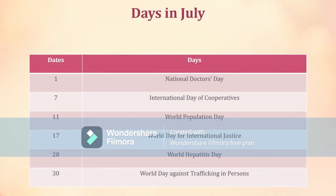Days in July. July 1st: National Doctors Day. July 7th: International Day of Cooperatives. July 11th: World Population Day. July 17th: World Day for International Justice. July 28th: World Hepatitis Day. July 30th: World Day Against Trafficking in Persons.